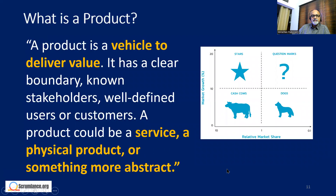What is a product? A product is a vehicle to deliver value. It has a clear boundary, known stakeholders, and well-defined users or customers. A product could be a service, a physical product, or something more abstract — such as improving quality of life for people or reducing traffic congestion.